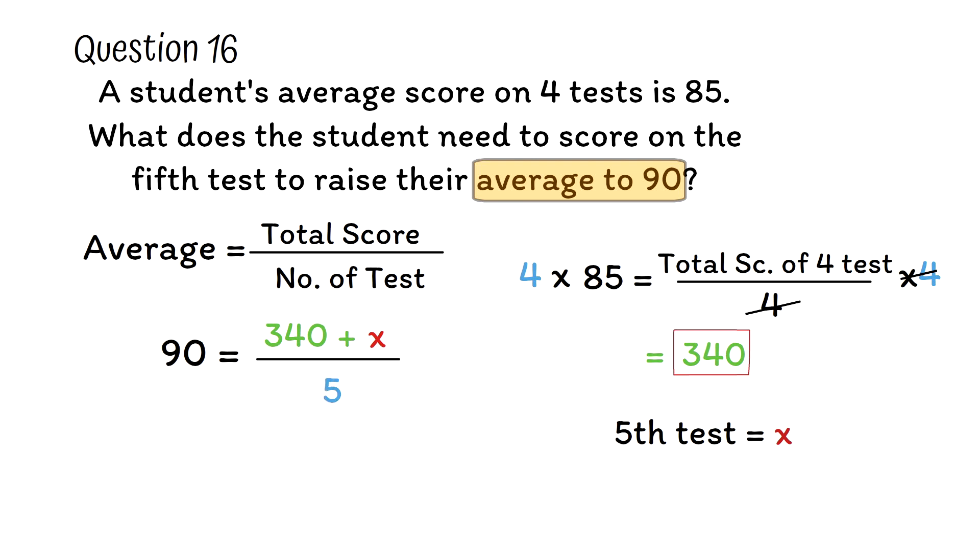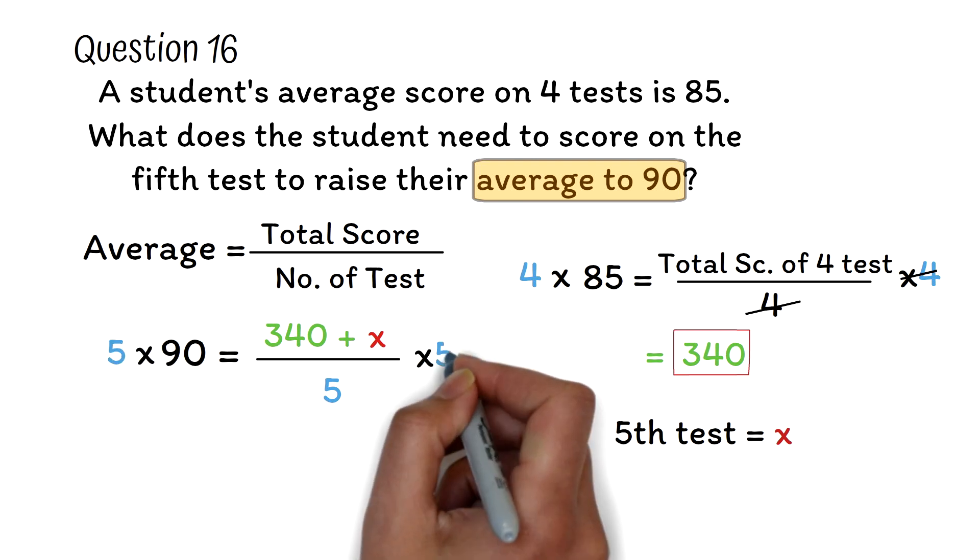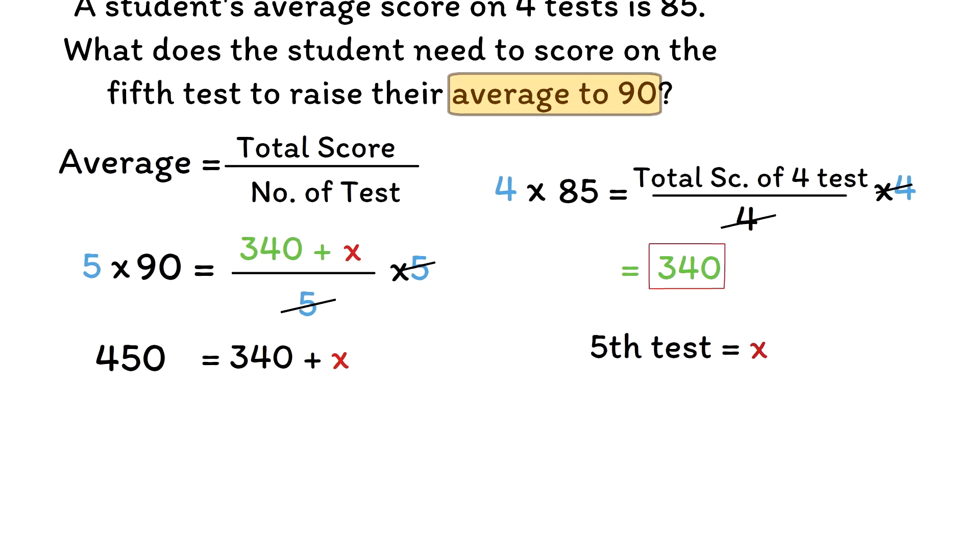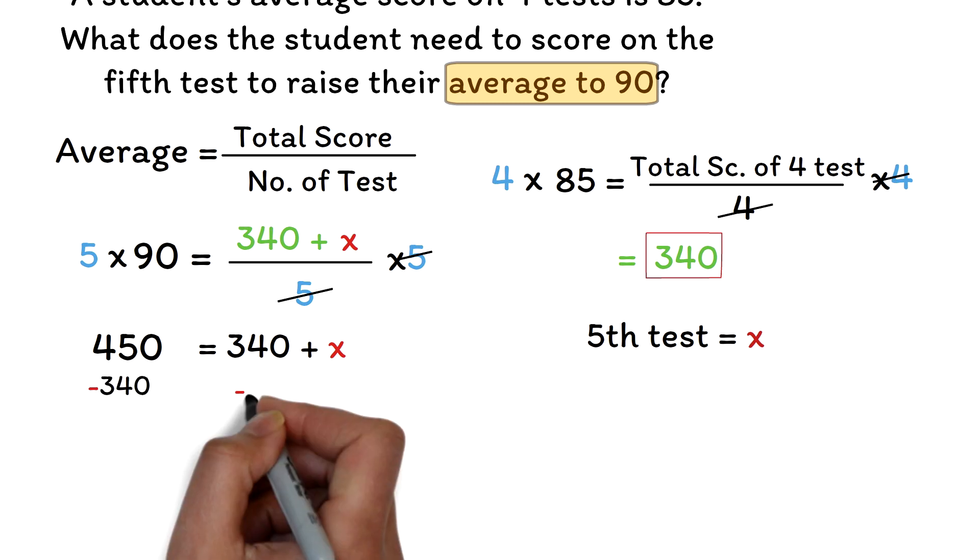Now we solve for x to know the score of the fifth test. Multiply both sides by the denominator, which is 5. 5 will cancel 5, leaving 340 plus x. When we multiply 90 by 5, we will get 450. To find x, we need to subtract 340 from both sides.